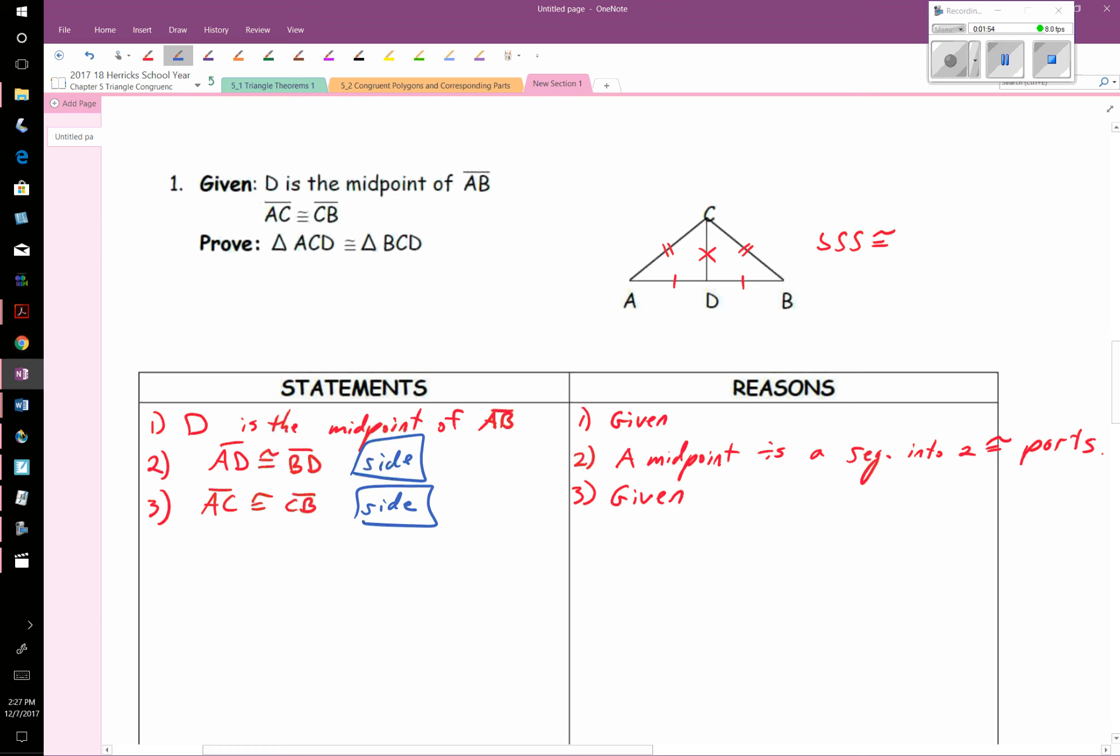Okay, and now looking at it, I also know that CD is congruent to itself, CD, right? And the reason is, well, a segment is congruent to itself, also known as a reflexive property. And I have the third piece of information, side.